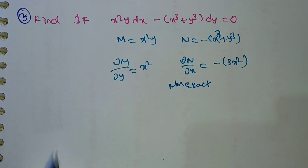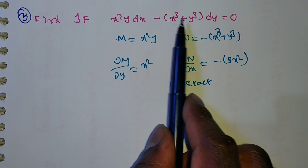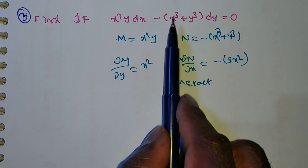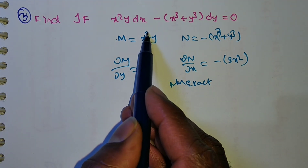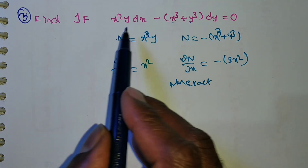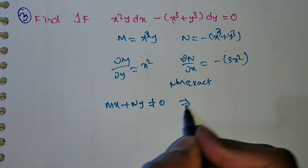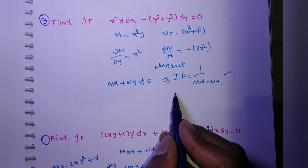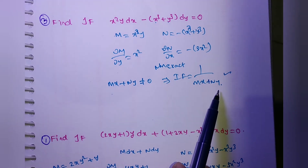Non-exact: first method is inspection. Here y dx and x³ dx terms are present. If you divide — x³ by y you cannot do, so inspection is not possible. Next, Rule 2: homogeneous. Degree of M is 3, degree of N is also 3. Both M and N are homogeneous functions of degree 3. So verify Mx + Ny: if Mx + Ny ≠ 0, then the integrating factor is 1/(Mx + Ny).